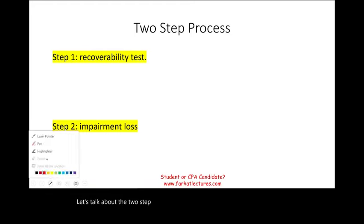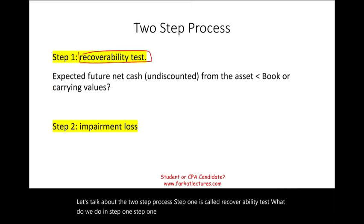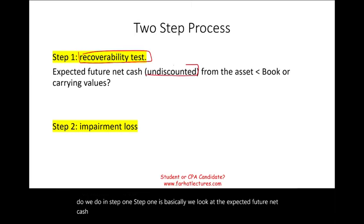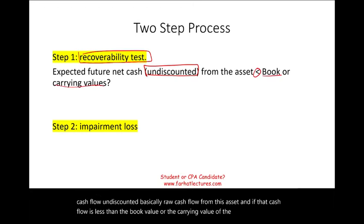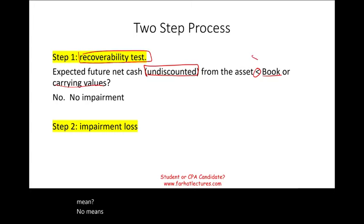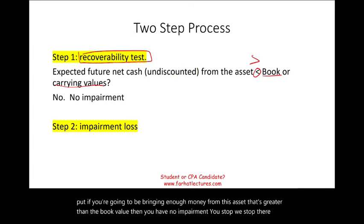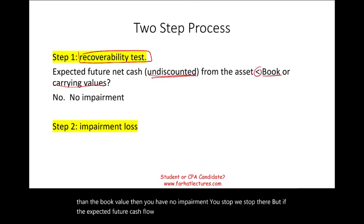Step one is called the recoverability test. We look at the expected future net cash flows — undiscounted, raw cash flows from this asset. If that cash flow is greater than the book value or carrying value of the asset, there is no impairment and we stop. But if the undiscounted future cash flow is less than the book value, we proceed to step two.